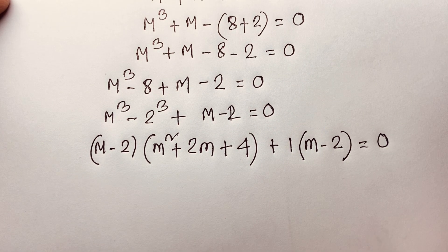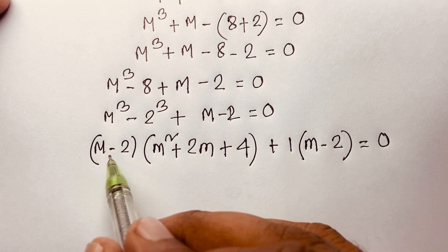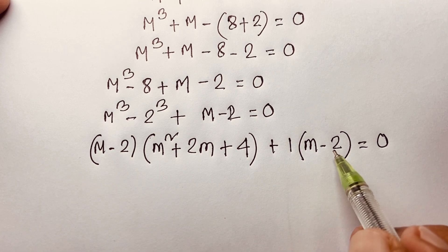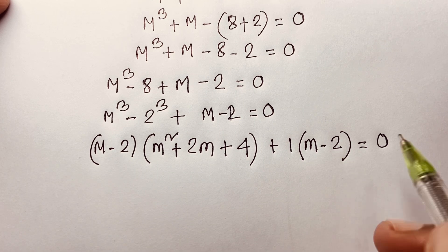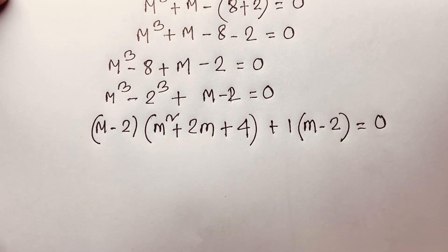Now you can see here that m minus 2 appears in both terms, so m minus 2 is a common factor.